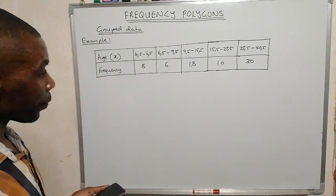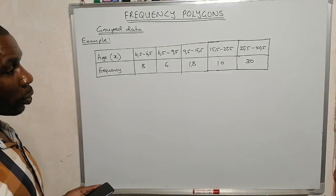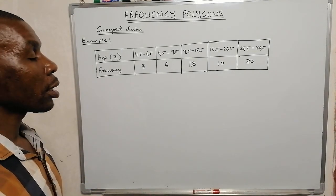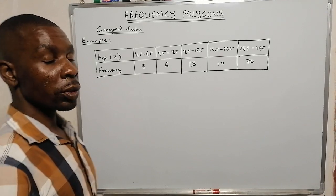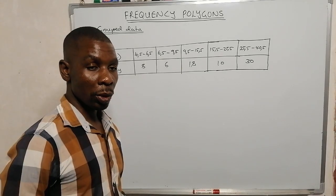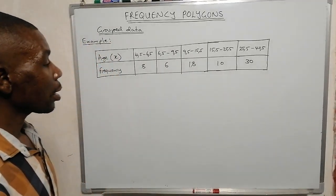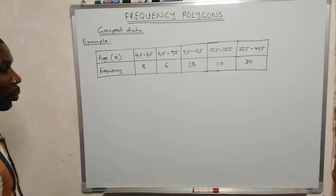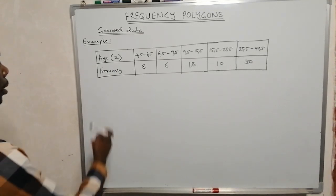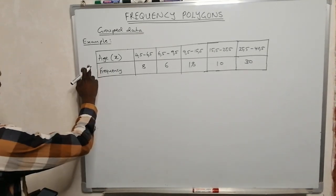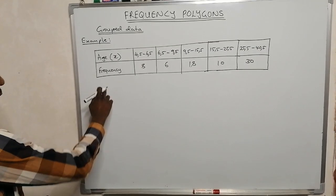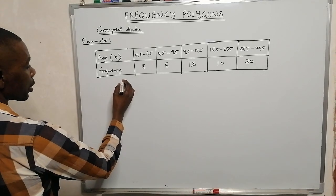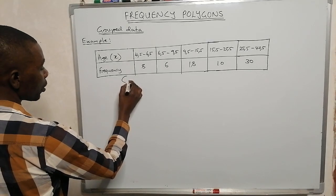To construct a frequency polygon from grouped data, we must construct a histogram first. To construct the histogram, we need age against frequency density. The question asks us to construct a frequency polygon.